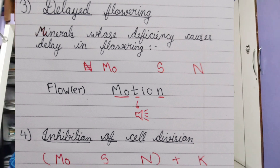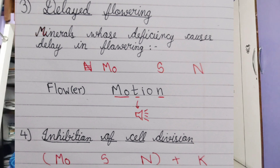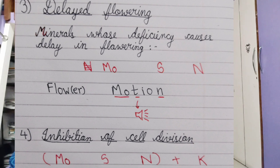The next deficiency symptom is delayed flowering. The minerals that cause delay in flowering in plants include molybdenum, sulfur, and nitrogen. The mnemonic I'm using is 'flow motion' — like slow motion, but with 'flow' indicating flowering. 'Motion' gives M-O for molybdenum, then S for sulfur, and finally N for nitrogen. So molybdenum, sulfur, and nitrogen cause delayed flowering.